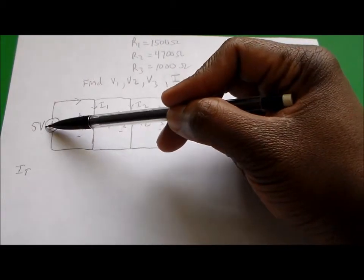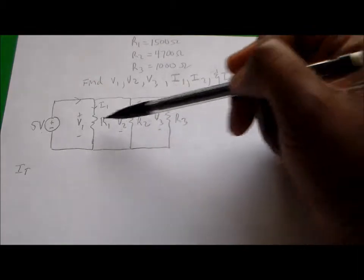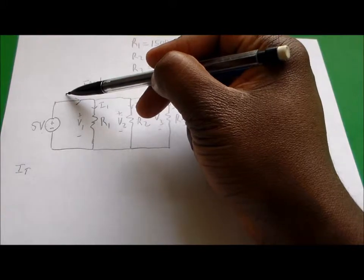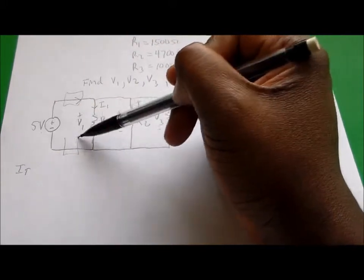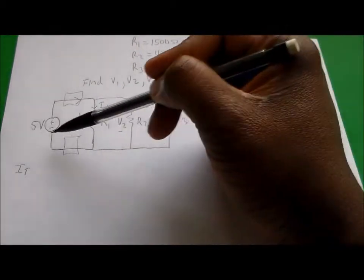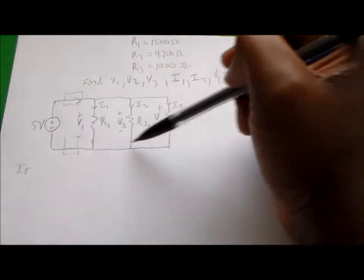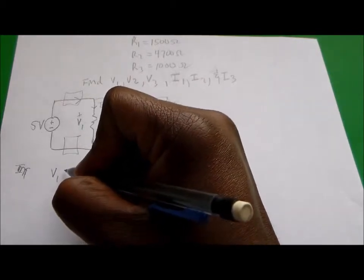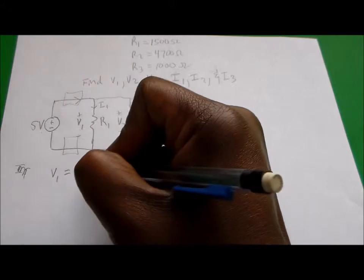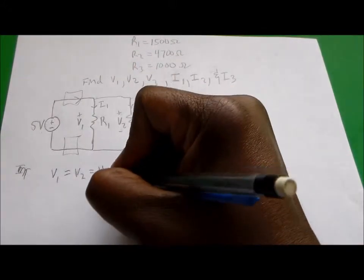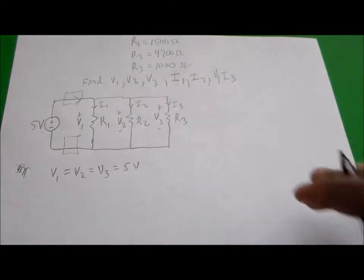That means the voltage here is the voltage that will be seen across all three resistors. The reason is because there's no resistors in these areas. The voltage source is connected directly to all those components, so they're in parallel. Therefore, V1 equals V2 equals V3, and all of those equal 5 volts.